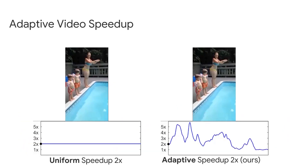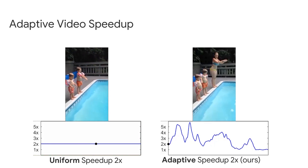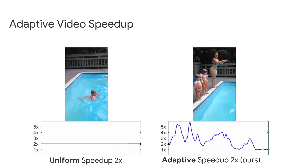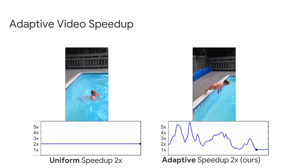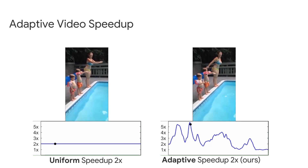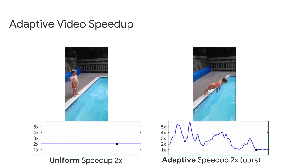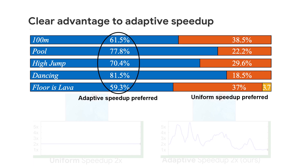On the left you can see the video uniformly sped up by 2x, so the duration is half of the original. On the right, we used our adaptive speedup — each segment was sped up as long as SpeedNet determined it was of normal speed. Our result has the same duration as the uniformly sped-up result but is much more naturally looking. This is supported by a user study we performed that shows a clear advantage of our adaptive speedup over uniform speedup in all cases.